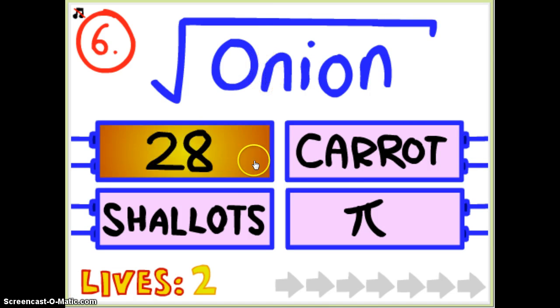Onions, square root of onion. What are shallots? Well, wait, onion, carrot, there's a thing. It's not a carrot. It's a carrot.